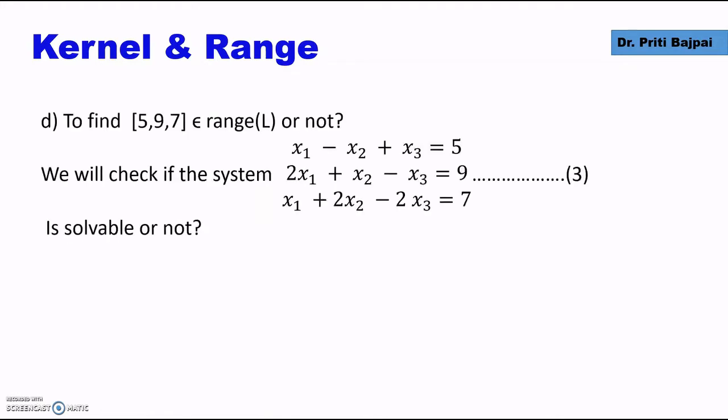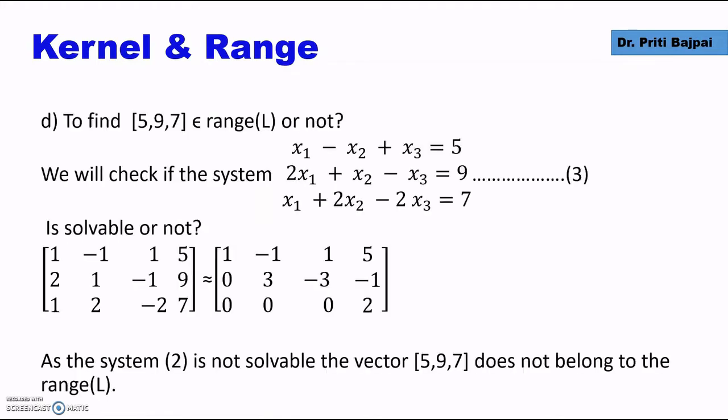What if we want to check whether (5, 9, 7) belongs to the range or not? We take the right-hand side as (5, 9, 7) in the system of equations and form the augmented matrix. We see that when we reduce it to row echelon form, the system is not solvable, which means (5, 9, 7) does not belong to the range of L.